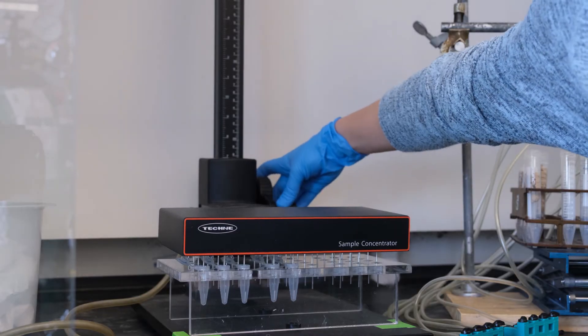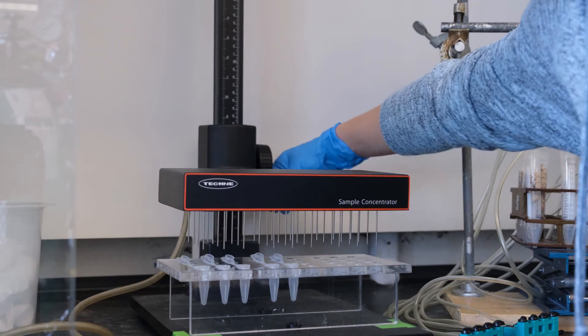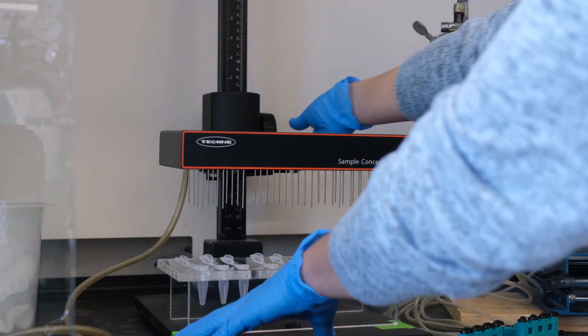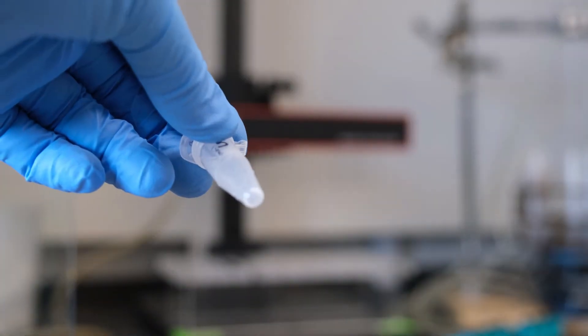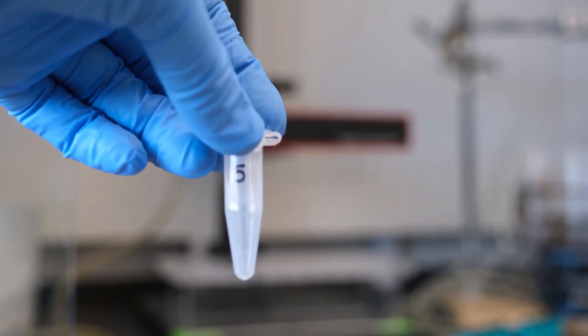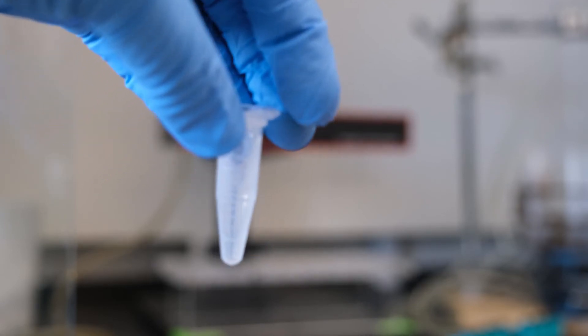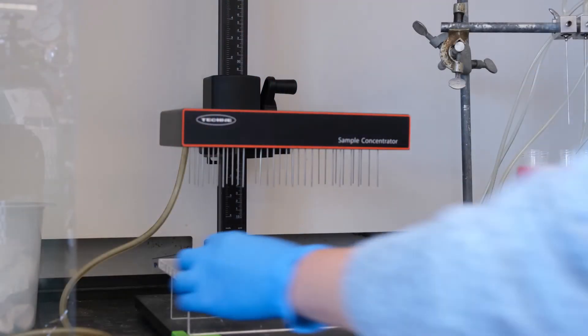When things look dry, raise the needles and remove a tube. Take care not to bump the needles as you do so. Check thoroughly that your tube is completely dry. Remaining solvent will interfere with chromatography. Remove all remaining tubes, checking each to make sure no liquid remains. Place your tubes on ice.